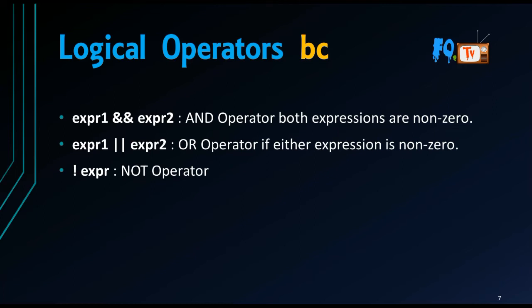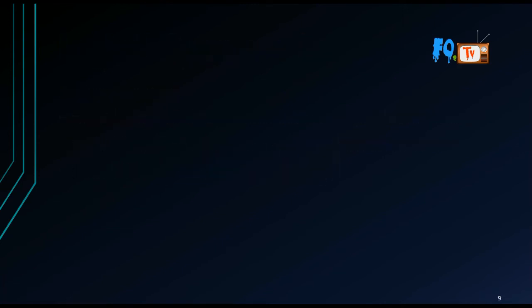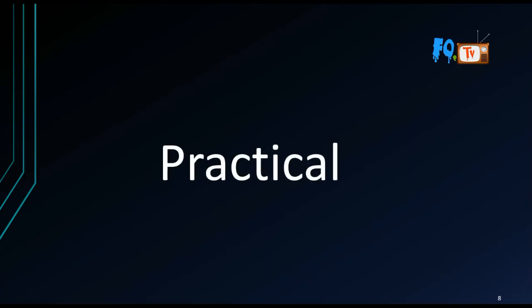Logical operators: the AND operator — if both expression1 and expression2 are non-zero (true), the statement executes. The OR operator — if expression1 is 0, expression2 will be evaluated; if both are zero, the result is 0. The NOT operator — used to negate an expression, checking if it is not equal to something.